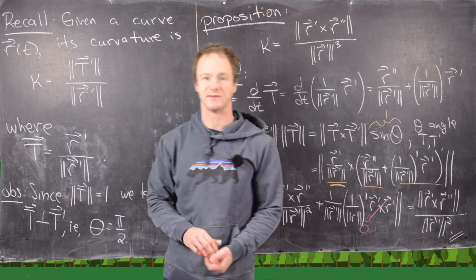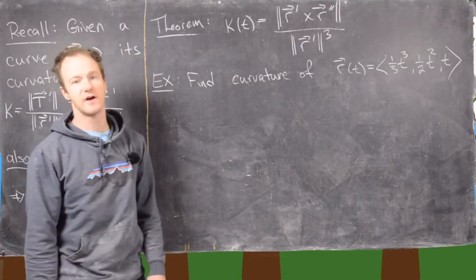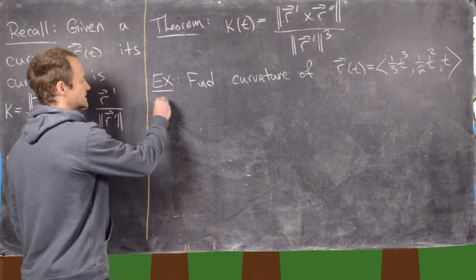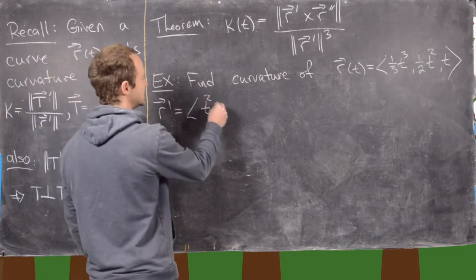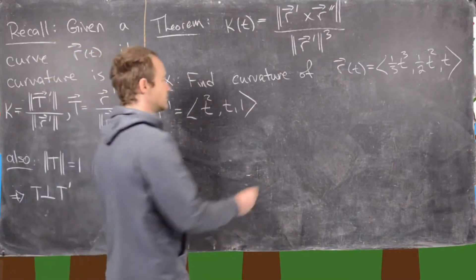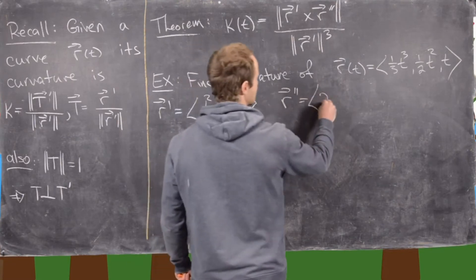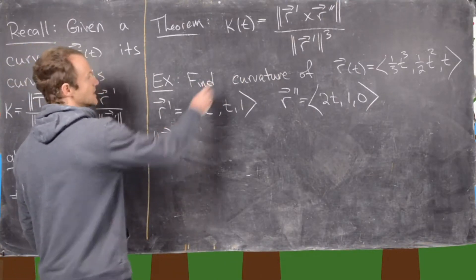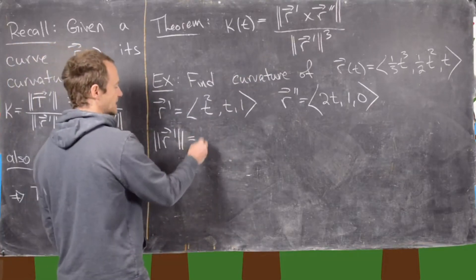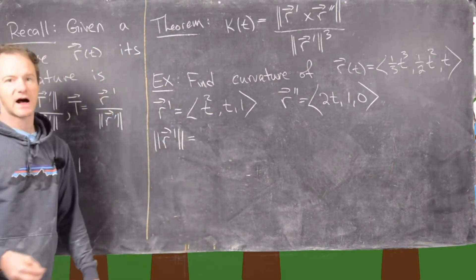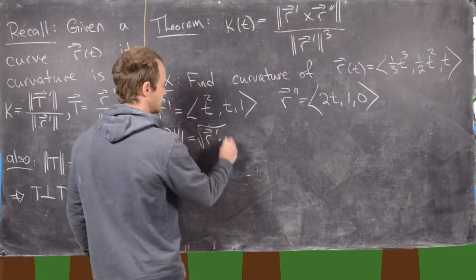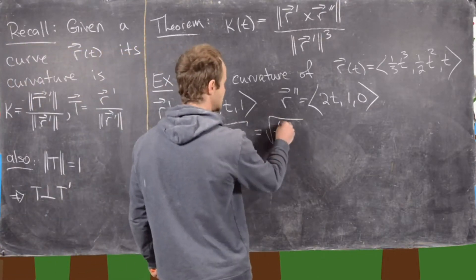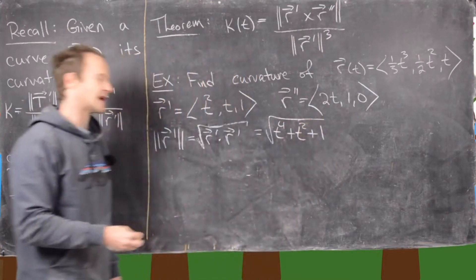We'll use this theorem to find the curvature of the curve r(t) = (t³/3, t²/2, t). First, calculate r': that's (t², t, 1). Then r'' is (2t, 1, 0). Now we need the magnitude of r', which is the square root of the dot product of r' with itself: that gives us the square root of t⁴ + t² + 1.